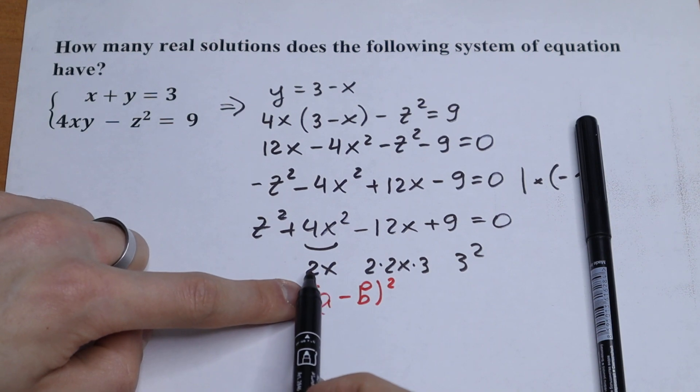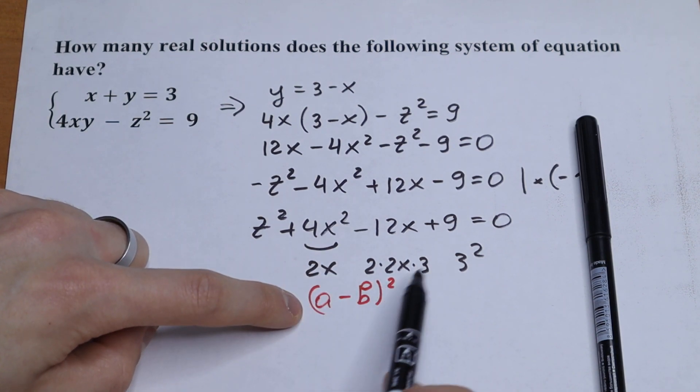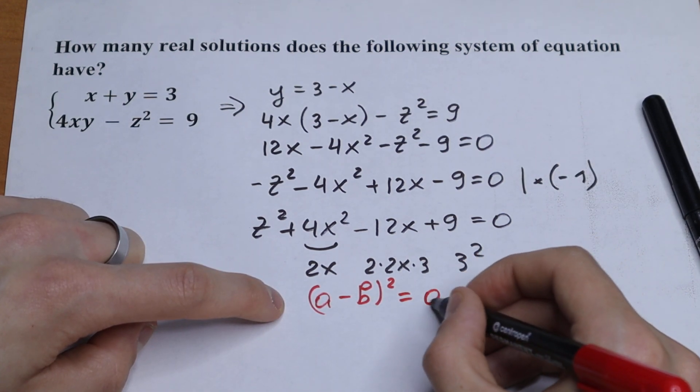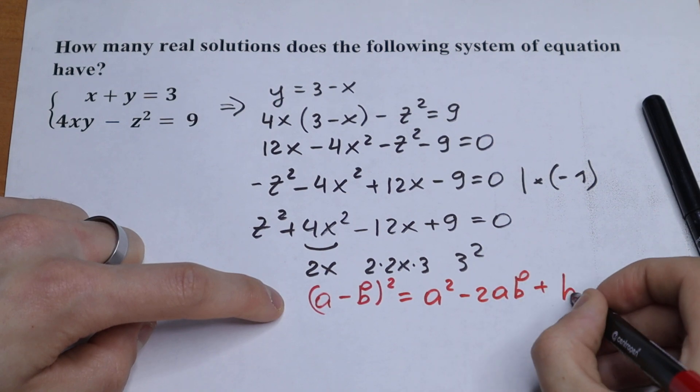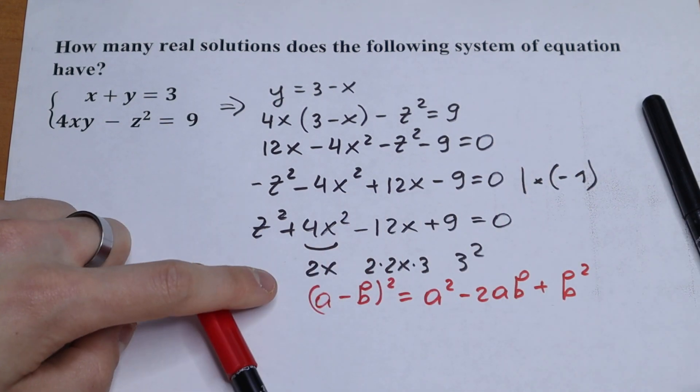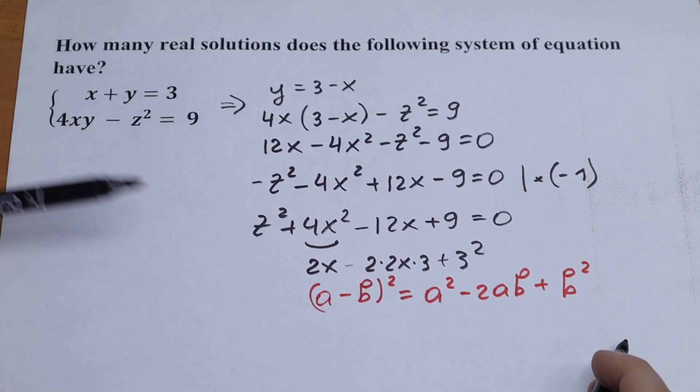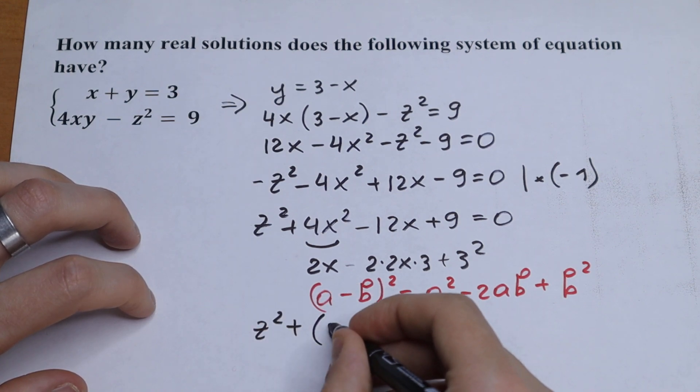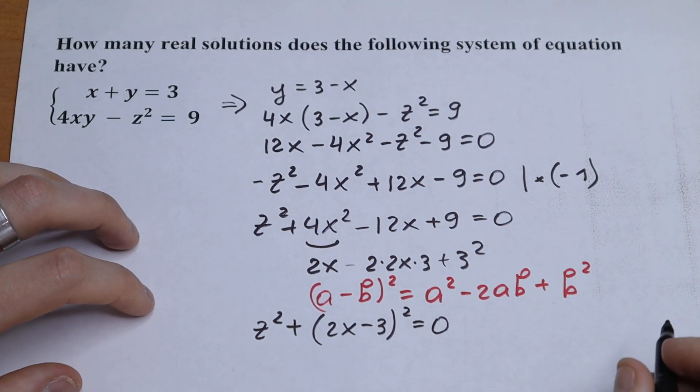Instead of a we have 4x square. So right here we have a equal to 2x and b equal to 3. So this will be our formula. I write this formula right here. So we have a square minus 2ab and plus b square. This is our formula. Let's use this formula right here.